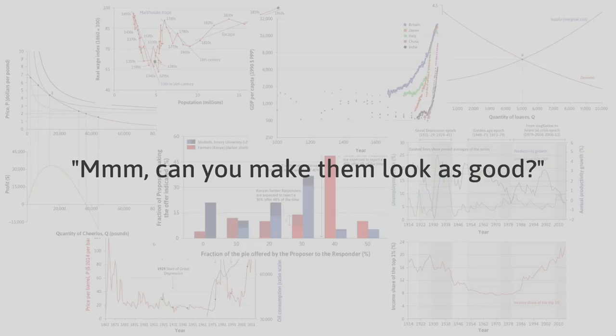But the next question they came with was: can you make them look as good as our originals? As publishers, it was very important to them that the figures looked good for teaching, that they complied to their style guidelines and that they were virtually indistinguishable from the originals. The second part of the project therefore focused on the aesthetics and this is where ggplot really came to the party.